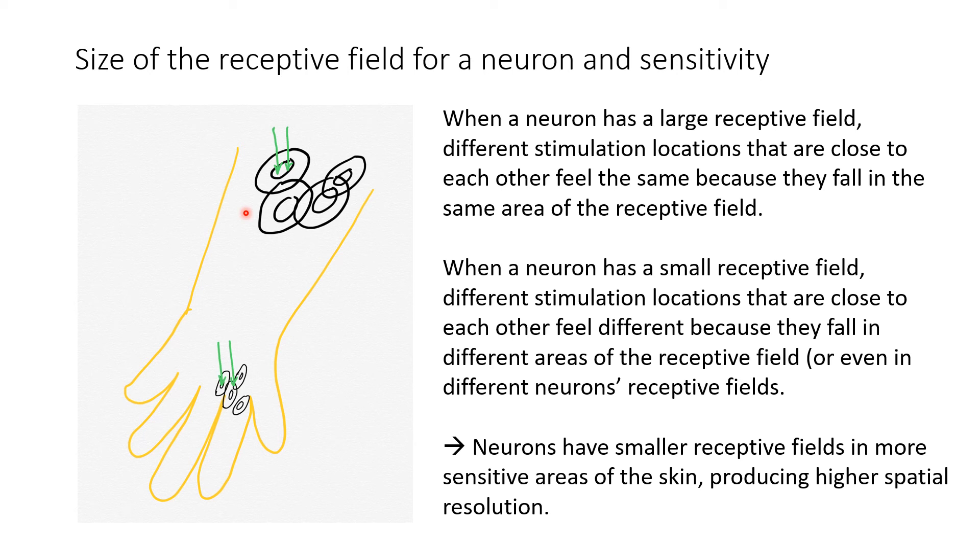For contrast, though, for a body area where we need more precise localization, such as the hand, the hand region of somatosensory area has much smaller receptive fields. So in the drawing here, you can see that these same two stimuli would fall on different receptive fields than they would as if they were on the arm, even though they're the same distance apart. So they would likely feel like they were in different locations of the hand, whereas they would feel relatively the same on the arm.